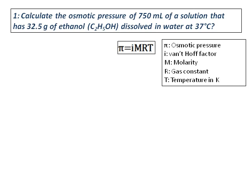R is the gas constant and T is the temperature. Since molarity is moles per liter, the unit of R should be L·atm/(mol·K). Whenever R is used, temperature must be in Kelvin. These are the factors to consider when solving osmotic pressure problems.